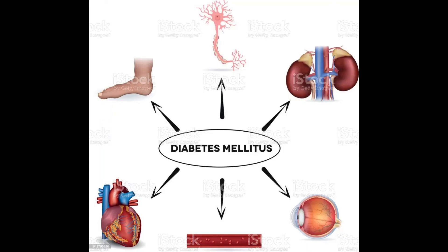Type 1 diabetes can start at any age, but it often starts during childhood or teen years. Type 2 diabetes, the more common type, can develop at any age. Type 2 diabetes is more common in people older than 40.